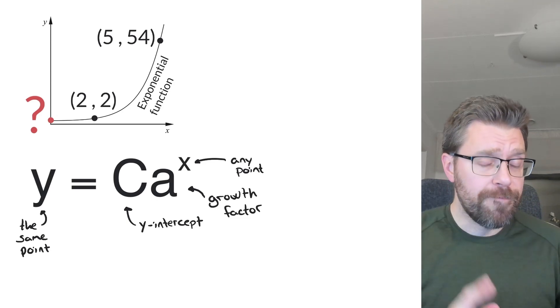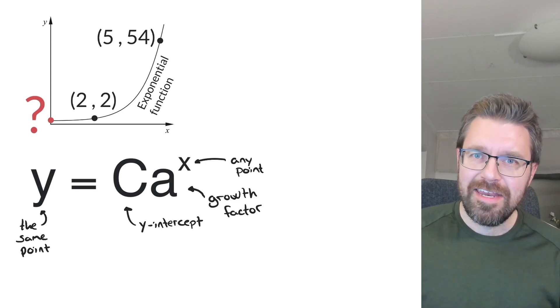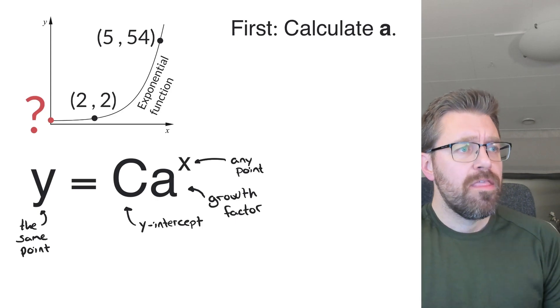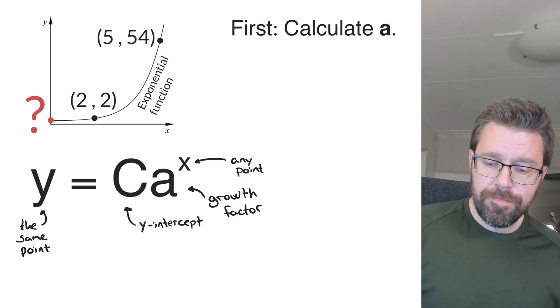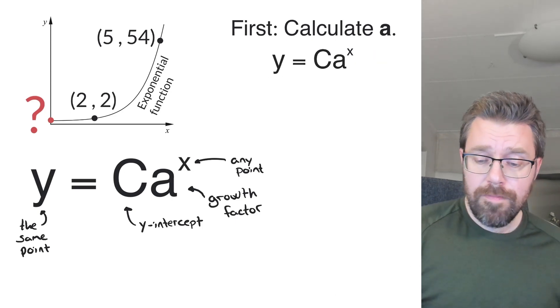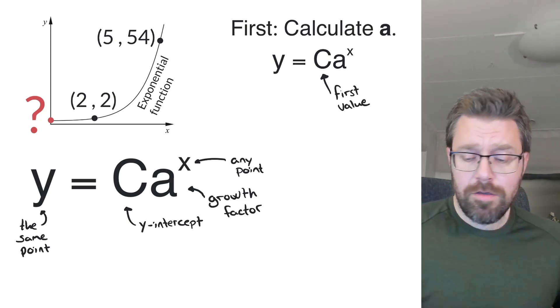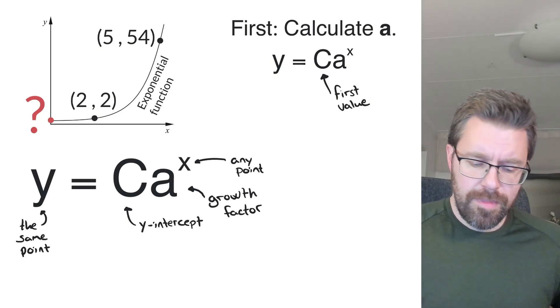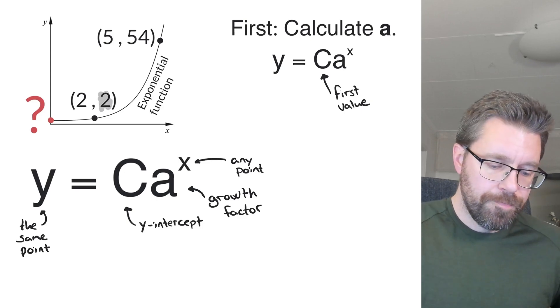We want to find c, but the first step we want to do is to find a. So how do we find a? We're using the same formula but in a little different way. The first step we are using y equals c times a raised to x, but c is the first value, the value of the first point right here. So c is the value 2 right here.